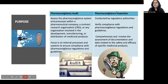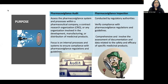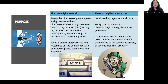First, we'll discuss what is a pharmacovigilance audit. It is done to assess the pharmacovigilance system and processes within pharmaceutical companies, contract research organizations, or any organization involved in the development, manufacturing, or distribution of medicinal products. The focus is on internal processes and systems to ensure compliance with pharmaceutical guidelines and regulations.